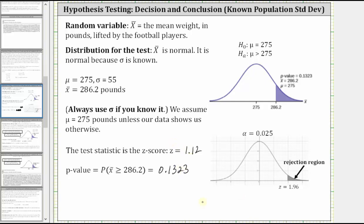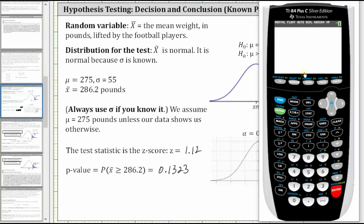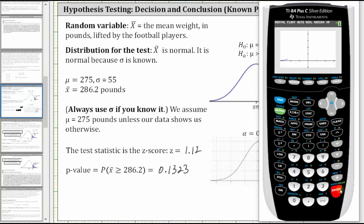Let's go back to the calculator. Press STAT, right arrow to TESTS, and ENTER on Z-test. This time go down to draw, keep everything the same, and press ENTER. Notice how this gives us the graph of the normal distribution. It shows the area that represents the p-value, and below we have the Z score and the p-value displayed.